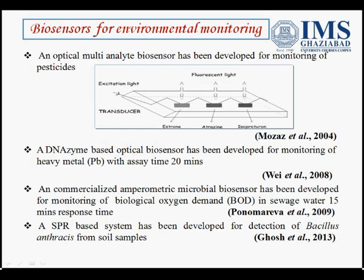Biosensors are also playing a very important role in environmental monitoring. An optical multi-analyte biosensor has been developed for monitoring pesticides. As we know, there are various types of pesticides — organochlorine, organophosphorus. This biosensor can detect two or three pesticides simultaneously. For example, Atrazine, Atragene, and Isoproturon are detected at the same time.